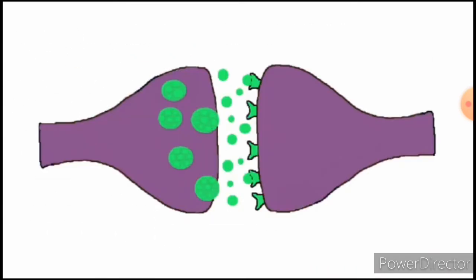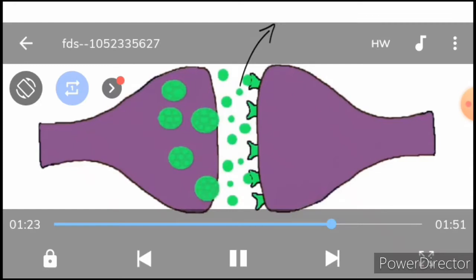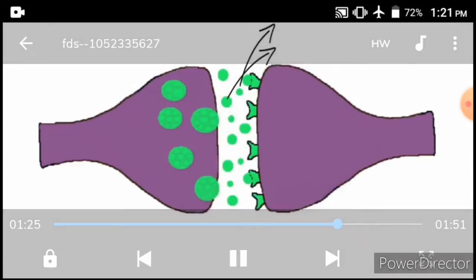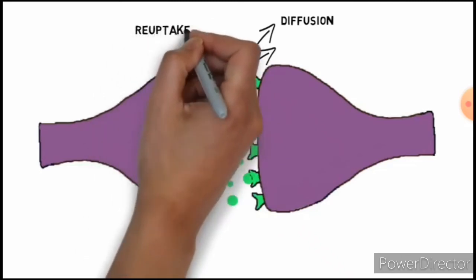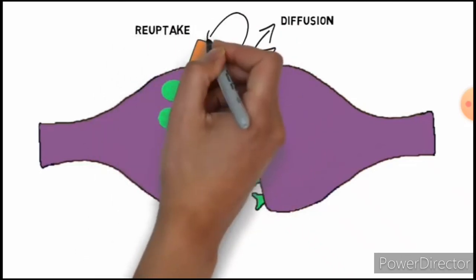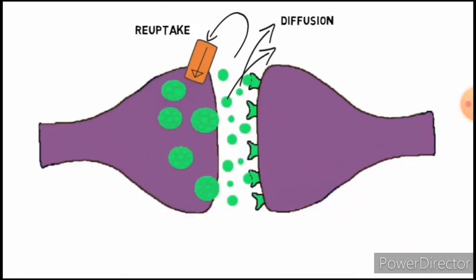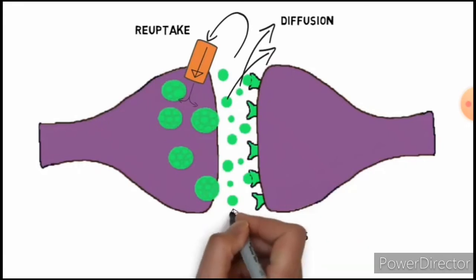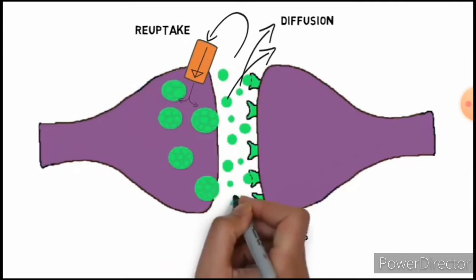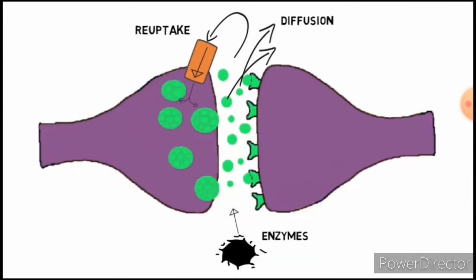Eventually the neurotransmitter molecules must be cleared from the synaptic cleft. Some of them will simply drift away in a process called diffusion. In some cases, the neurotransmitter is taken back up into the presynaptic neuron in a process called reuptake. Once back inside the presynaptic neuron, the neurotransmitter can be recycled and reused. In other cases, enzymes break down the neurotransmitter within the synaptic cleft, and the component parts can be sent back into the presynaptic neuron to make more neurotransmitter.